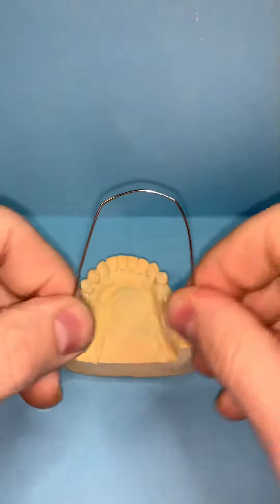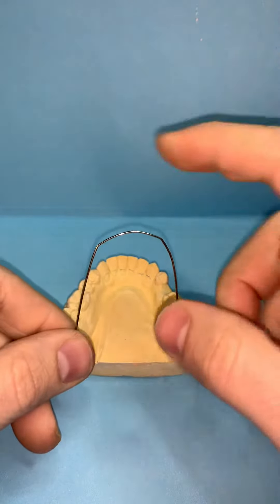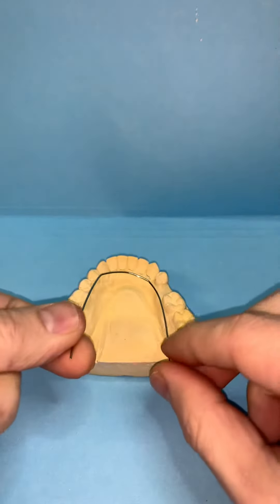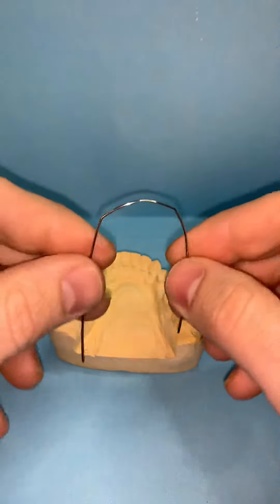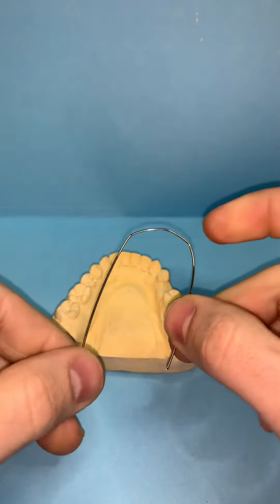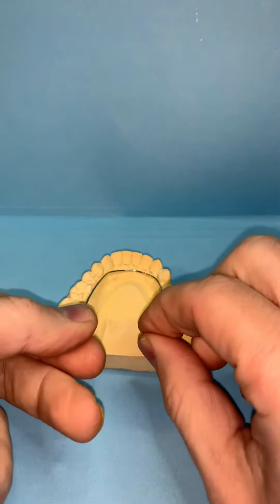So now you have your wire almost with two little squares. Once again, make sure it's smaller than the arch because you don't want it to put any pressure on the teeth.